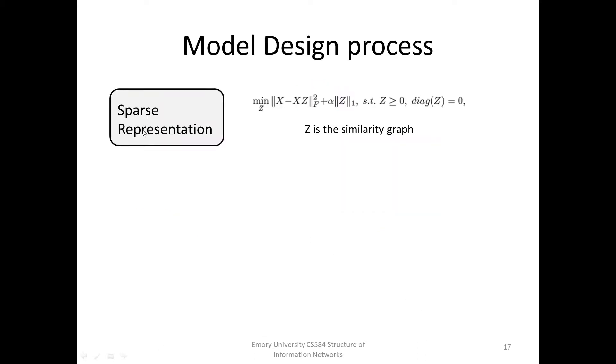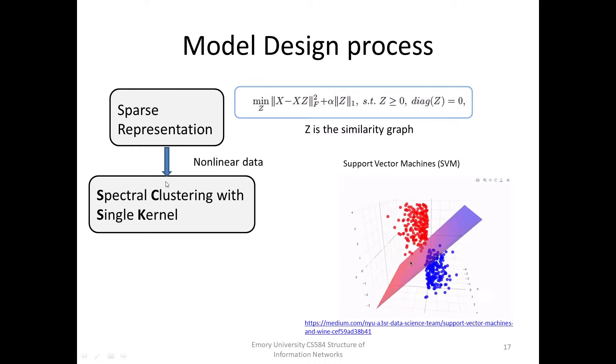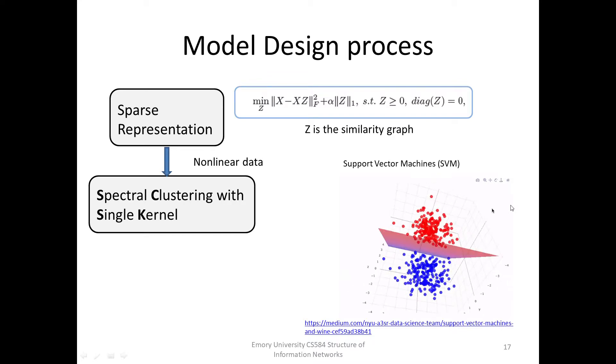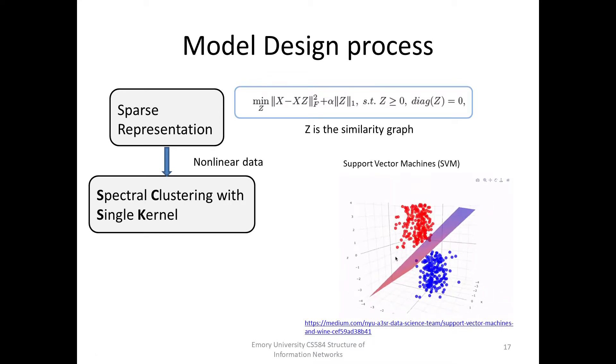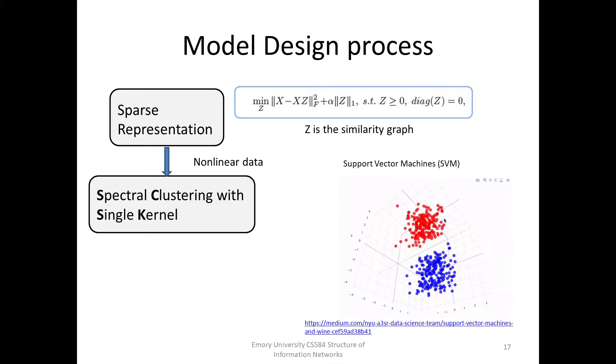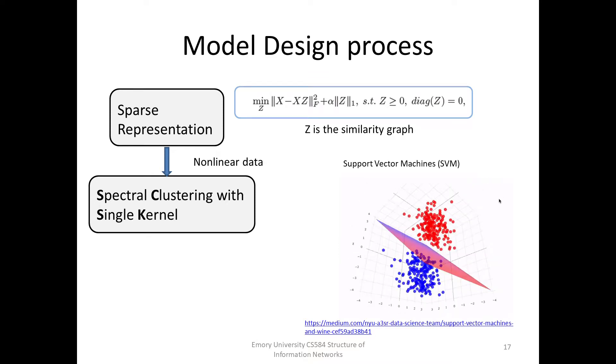Sparse representation assumes that all the points lie in a union of independent or disjoint subspaces and are noiseless. This is the sparse representation equation. But in real case, non-linear data makes the representation less informative. Recalled from SVM algorithm, non-linear data may represent linearity when mapped to an implicit higher-dimension space with a kernel function. To fully explore data information, the paper uses a kernelization framework, so they propose the method in kernel space.